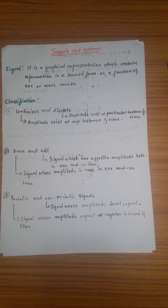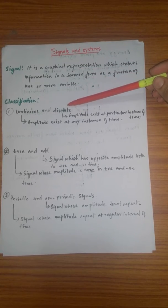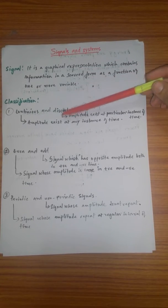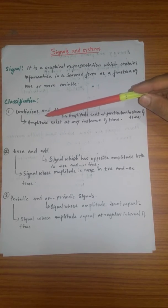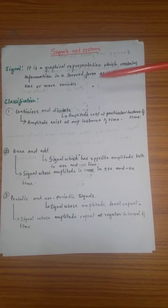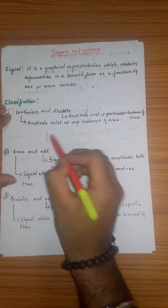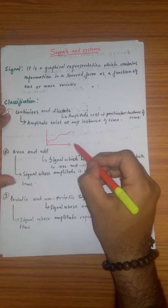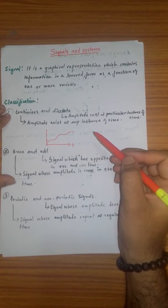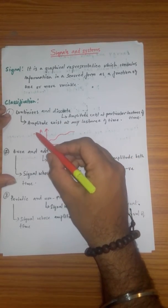So what are the classifications of signals? There are totally six kinds of signals, which are divided as continuous and discrete. A continuous signal is one where the amplitude of the signal exists at any instant of time. For example, if I draw a graph, this is a continuous signal where the x-coordinates represent time.